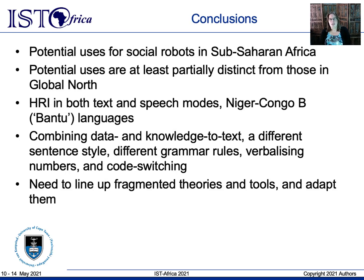In conclusion, there are indeed potential uses of social robots in sub-Saharan Africa that could assist society rather than threaten jobs or constitute imperialism by other means. The use cases identified are at least partially distinct from those in the global north, such as assistance in large classes and remote primary healthcare. Human-robot interaction is expected to be both text- and speech-based, requiring capabilities in Niger-Kongo languages. Salient aspects include combining data-to-text with knowledge-to-text, different sentence styles and grammar rules, and support for multiple languages. Existing theory, techniques, and proof-of-concept tools need to be aligned, made openly available, and adapted to meet NLG requirements for human-robot interaction with social robots.